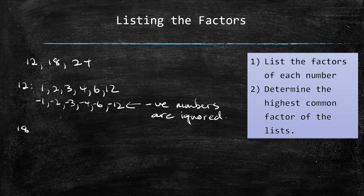Let's look at 18. I will only list the positive factors of 18: 1, 2, 3, 6, 9, 18.